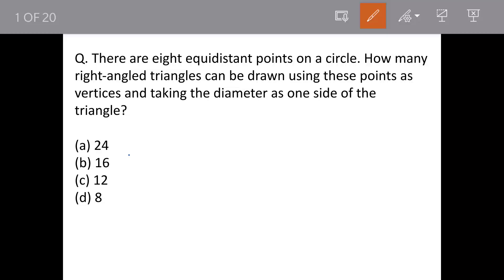There are eight equidistant points on a circle. How many right-angled triangles can be drawn using these points as vertices, taking the diameter as one side of the triangle? These are the options, so let's understand the question.